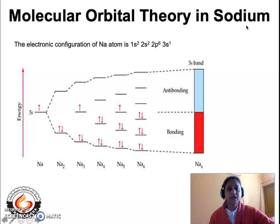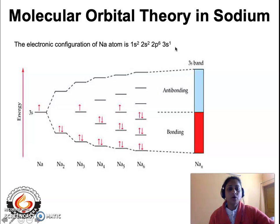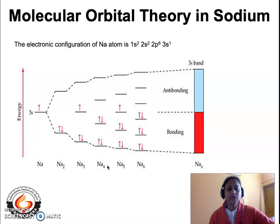Sodium has an atomic number of 11, out of which 10 electrons are housed in the innermost orbitals, whereas one single electron is placed in the 3s atomic orbital — that is the valence orbital. While considering sodium metal and the bonding in sodium, we are going to consider only the valence electrons. This is an energy level diagram of a sodium molecule, showing how many atoms of sodium get added to form a molecule. A single sodium atom has only one electron in the 3s atomic orbital.